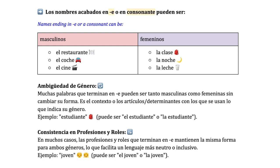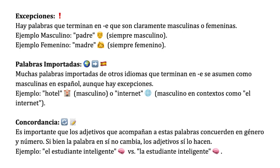Consistency in professions and roles: in many cases, professions and roles ending in E maintain the same form for both genders, facilitating a more neutral or inclusive language. For example, joven can be el joven or la joven. There are some exceptions — words ending in E that are clearly masculine or feminine, such as padre, which is always masculine, or madre, which is always feminine.